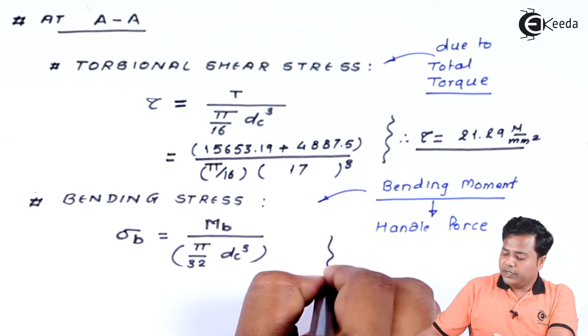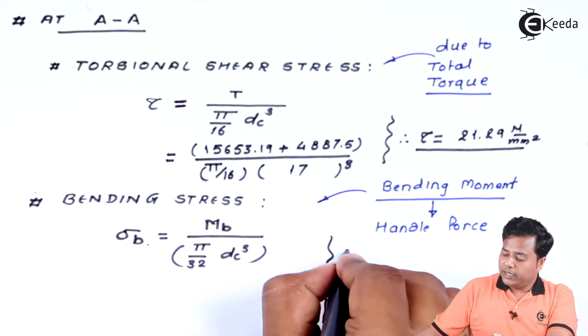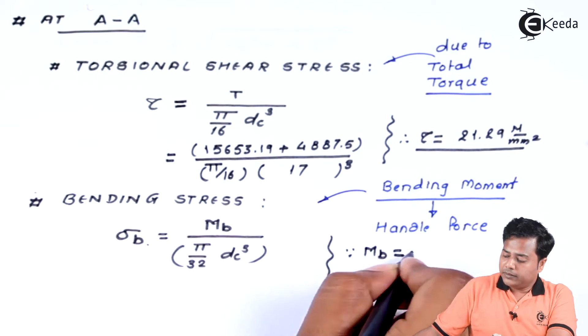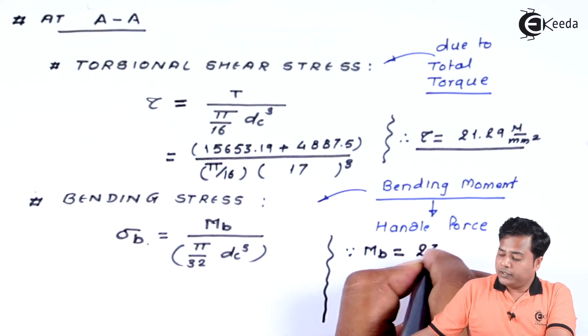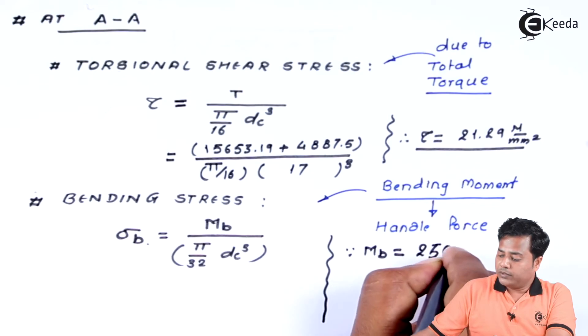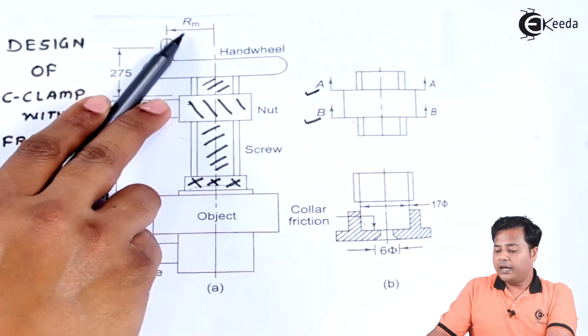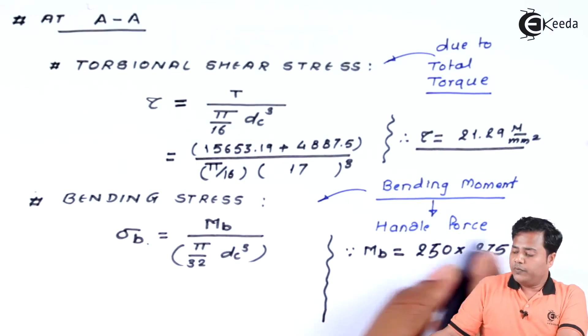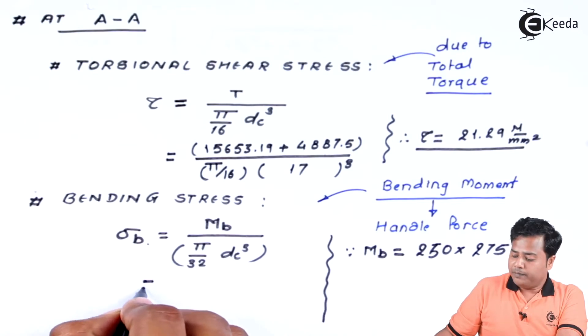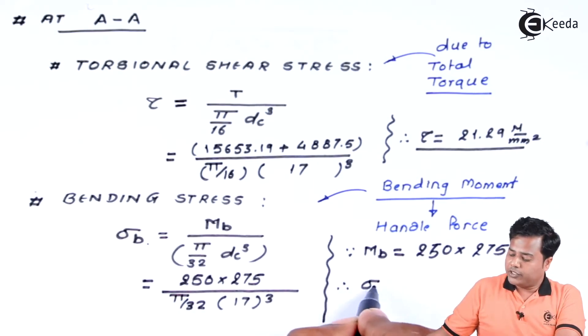Second is bending stress. Now let us move ahead to the bending moment first before we go to the bending stress. We know that bending moment will be given by the operator's force, that is 250 Newton, into the length at which the operator is applying the force. We know that from this case, the distance given is 275. So we can use this particular expression. Let us substitute them.